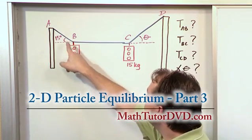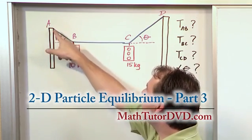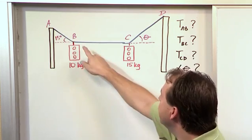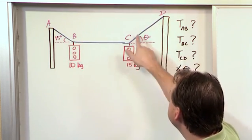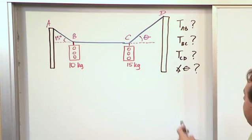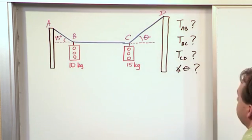And you can see that there's a 15 degree angle here between cable AB and the horizontal. This is a horizontal line. And then we have a cable CD with another angle. But this angle is unknown. We don't know what that angle is.